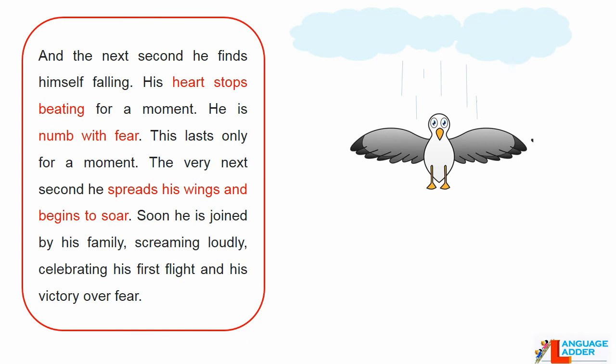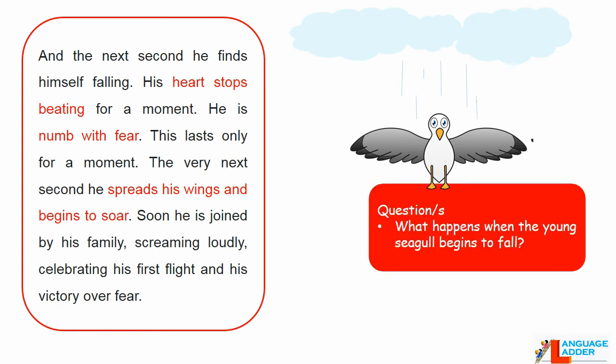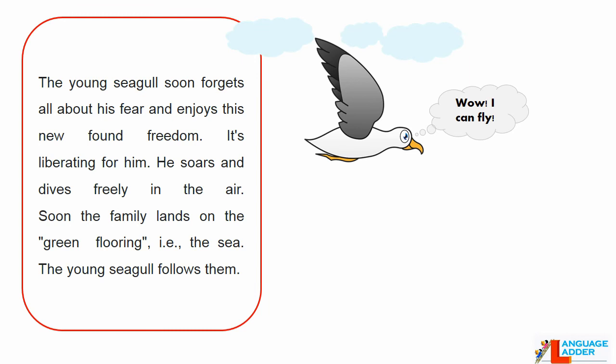The next second he finds himself falling. His heart stops beating for a moment — he's numb with fear — but this lasts only for a moment. The very next second he spreads his wings and begins to soar. Soon he is joined by his family, screaming loudly, celebrating his first flight and his victory over fear. The young seagull soon forgets all about his fear and enjoys this newfound freedom. It's liberating for him. He soars and dives freely in the air, and soon the family lands on the green surface of the sea.